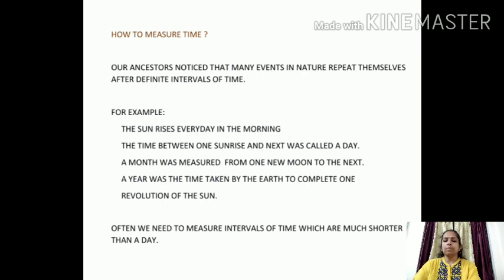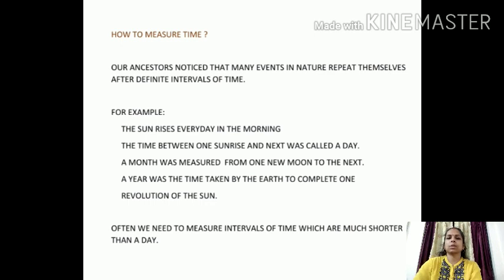How do we measure a time interval of a month or a year? Our ancestors noticed that many events in nature repeat themselves after definite intervals of time. For example, the sun rises every day in the morning. The time between one sunrise and the next is called a day. Similarly, a month was measured from one new moon to the next, and a year was the time taken by the earth to complete one revolution around the sun.